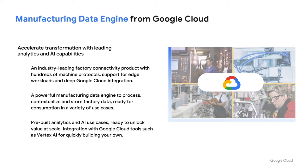We see this as a data story — all about accelerating your digital transformation journey for manufacturing and getting the best of Google Cloud's analytics and AI capabilities. The data engine consists of three real areas. First, connecting all of your machines with an industry-leading solution co-developed with Litmus Automation, which connects to any machine edge protocol. Second, a powerful manufacturing data engine to process, contextualize, and store data in BigQuery. Third, pre-built analytics and AI use cases to increase time to value.